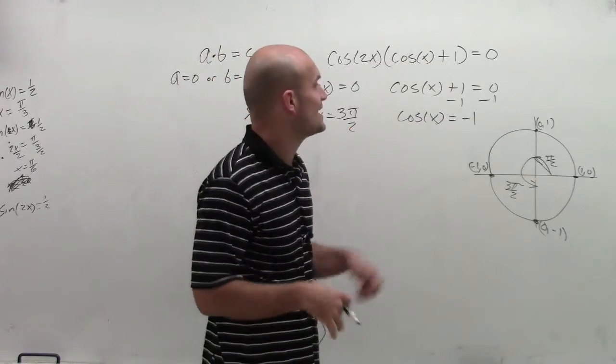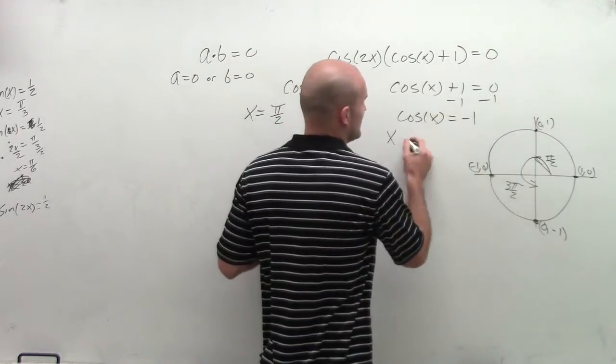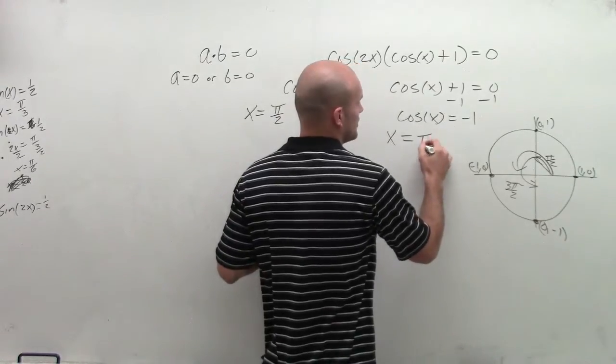Then let's go and look at when is cosine equal to negative 1. Well, the cosine value is only equal to negative 1 at one value, and that is when x equals halfway around the circle, which is equal to pi.